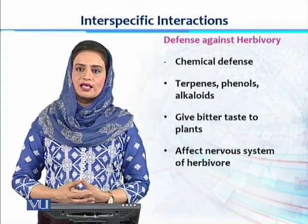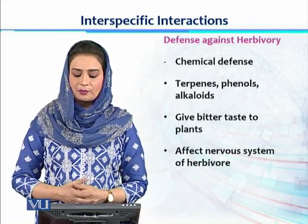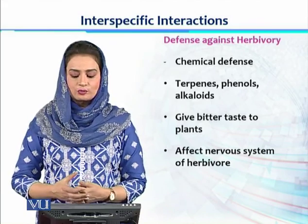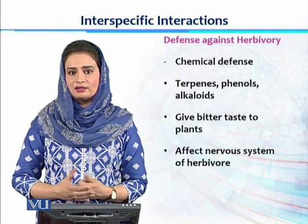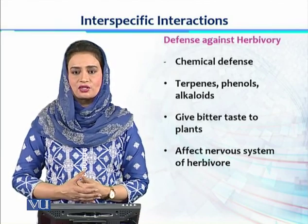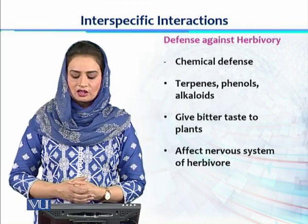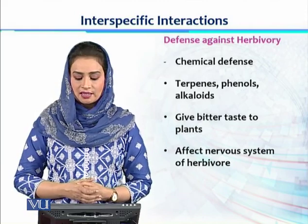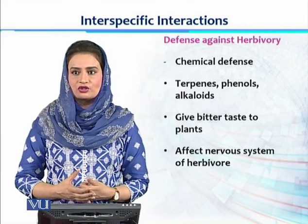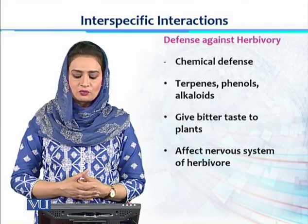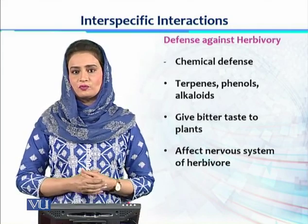The next type of defense against herbivory is chemical defense. Plants release certain compounds such as terpenes, phenols, and alkaloids, which give them a bitter taste so herbivores don't prefer to eat them. Other chemical compounds produced by certain plant species affect the nervous system of herbivores — compounds that resemble nicotine or caffeine — making herbivores avoid those plants. These are the defense mechanisms of plants against herbivory.